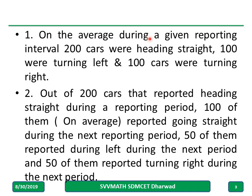On the average, during a given reporting interval, 200 cars were heading straight, 100 were turning left, and 100 cars were turning right. Out of 200 cars that reported heading straight in a reporting period, 100 of them on average reported going straight during the next reporting period, 50 of them reported turning left during the next period, and 50 of them reported turning right during the next period.